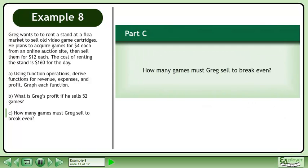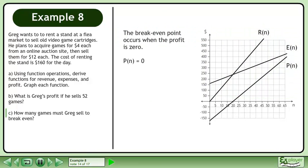Now we'll move on to part C. How many games must Greg sell to break even? The break even point occurs when the profit is 0. We can represent this with the equation P(n) = 0.